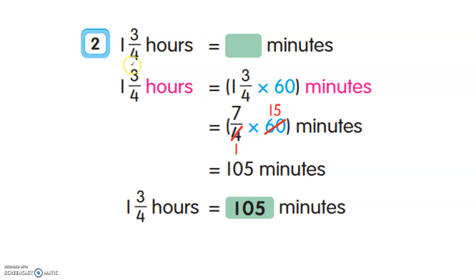The second question: 1 and 3 over 4 hours equals how many minutes? We want to convert into minutes. This is a mixed number — there is a whole number and a fraction. Just now we learned with a proper fraction like 1 over 2. This one is a mixed number.